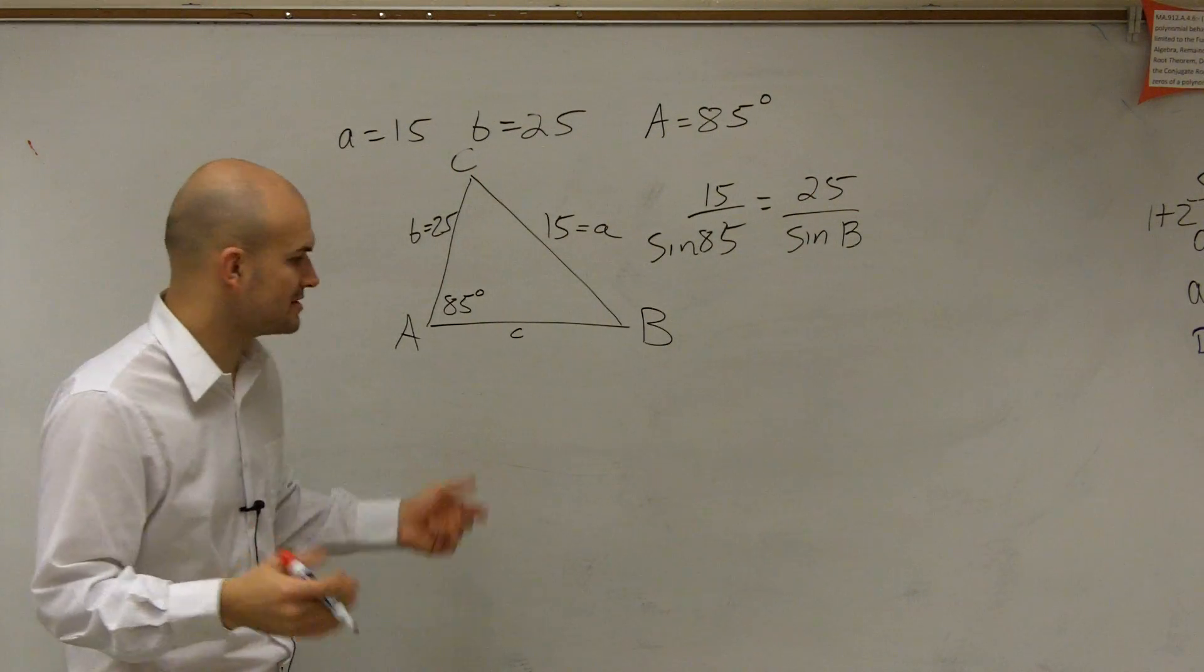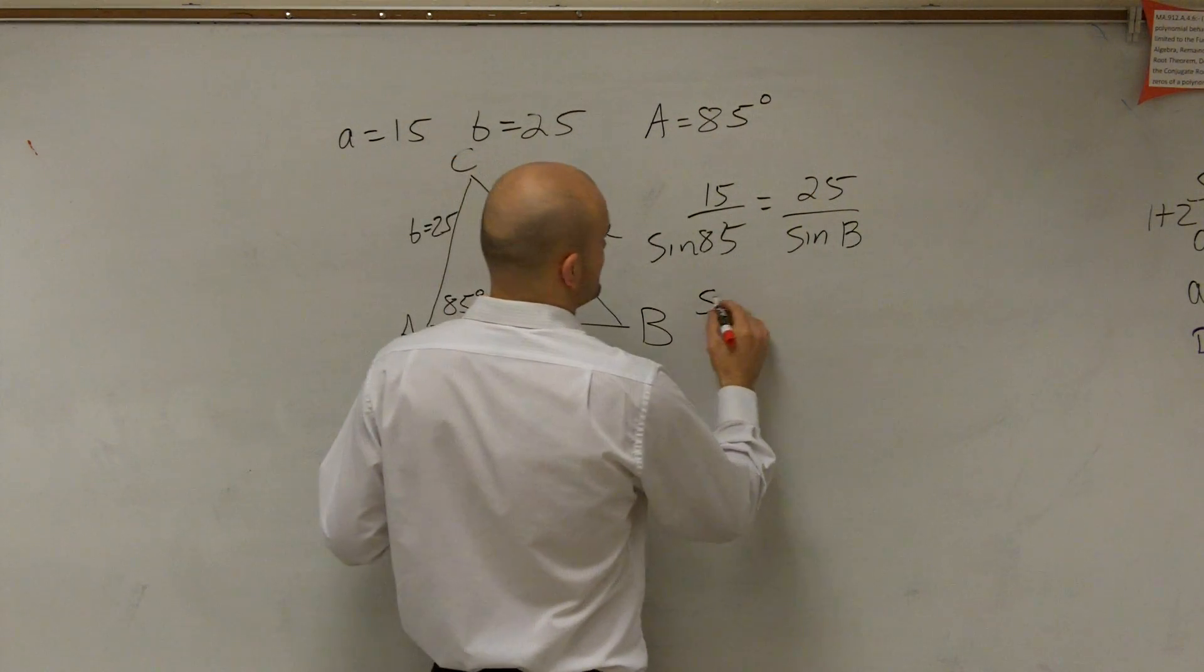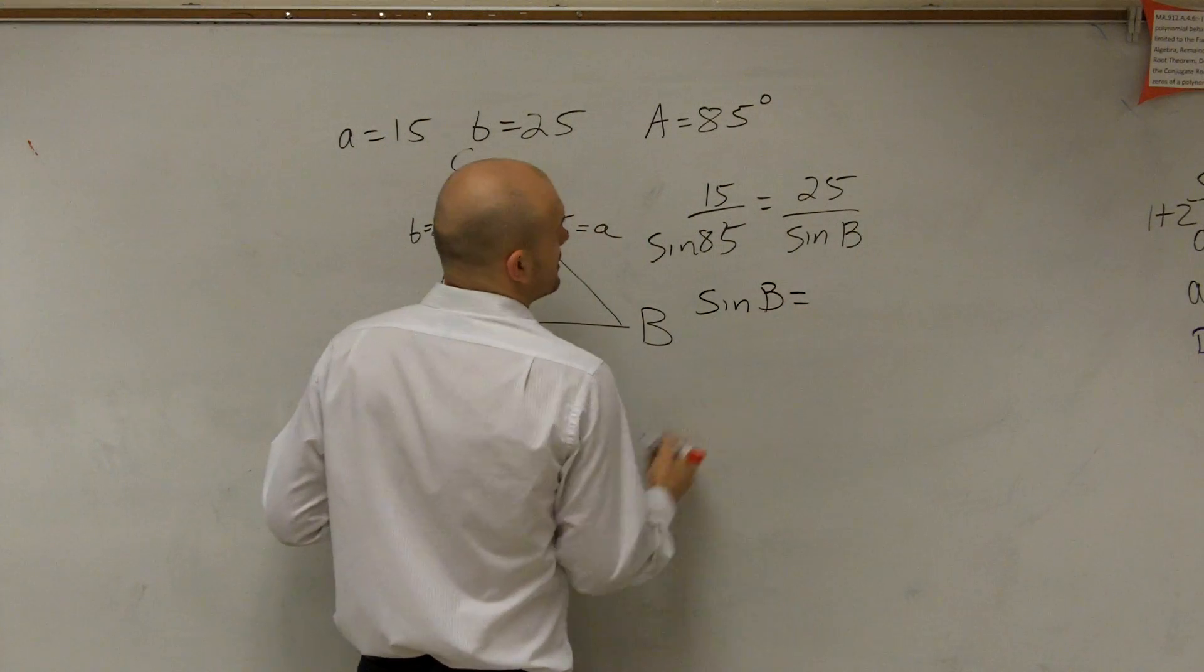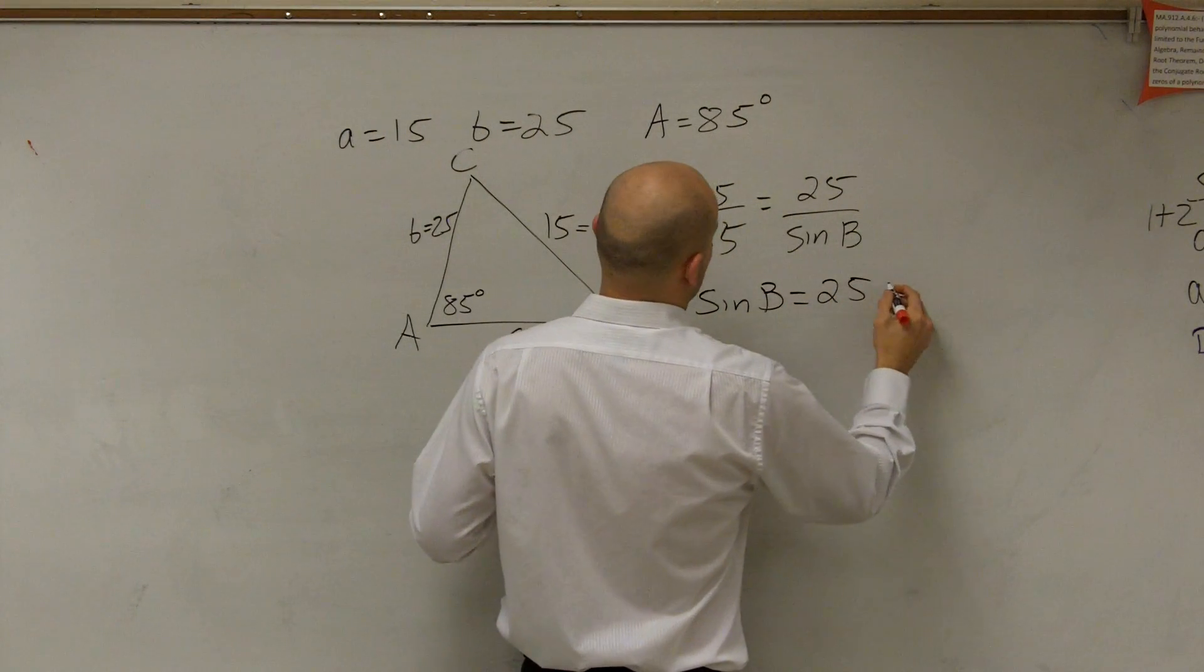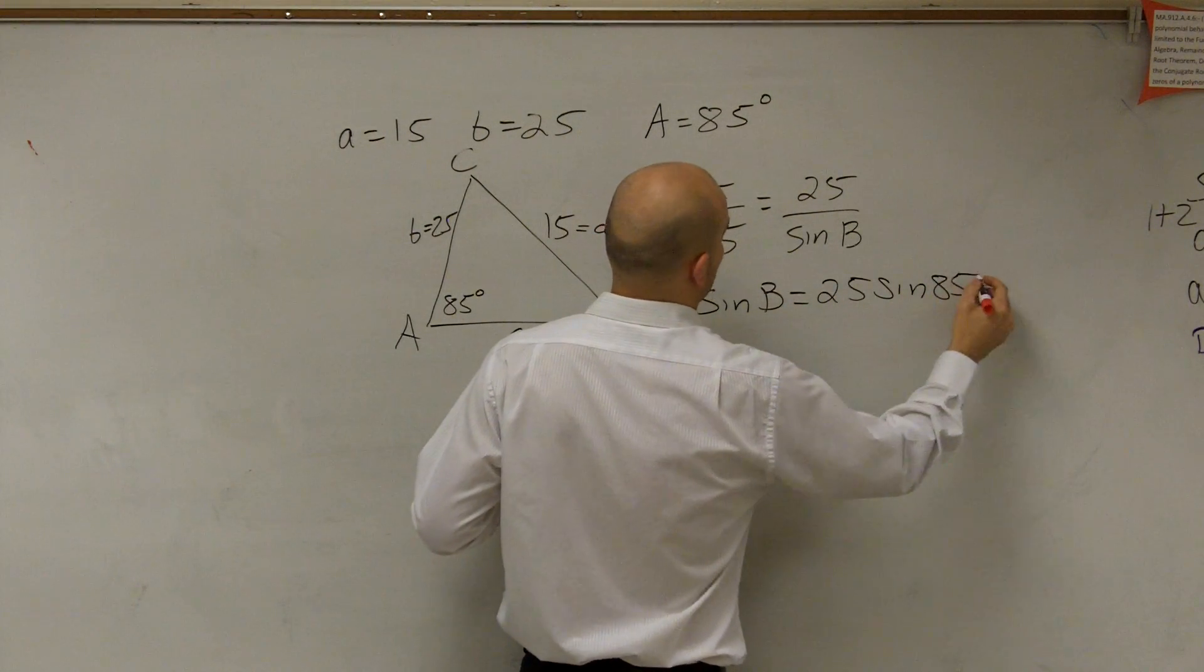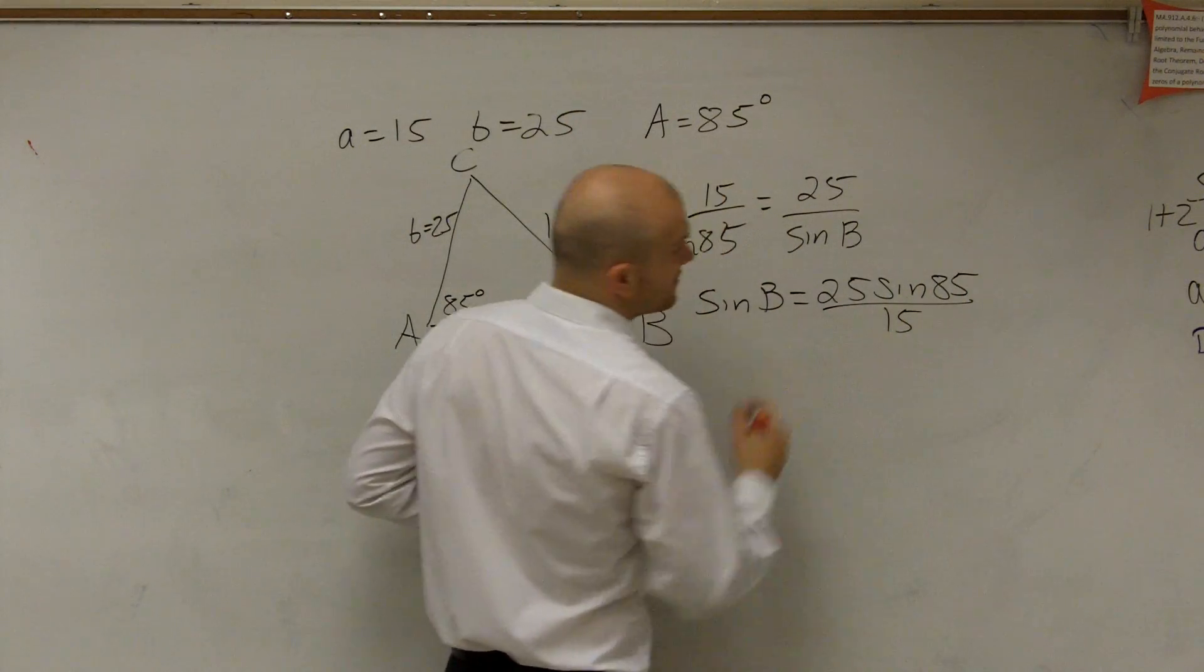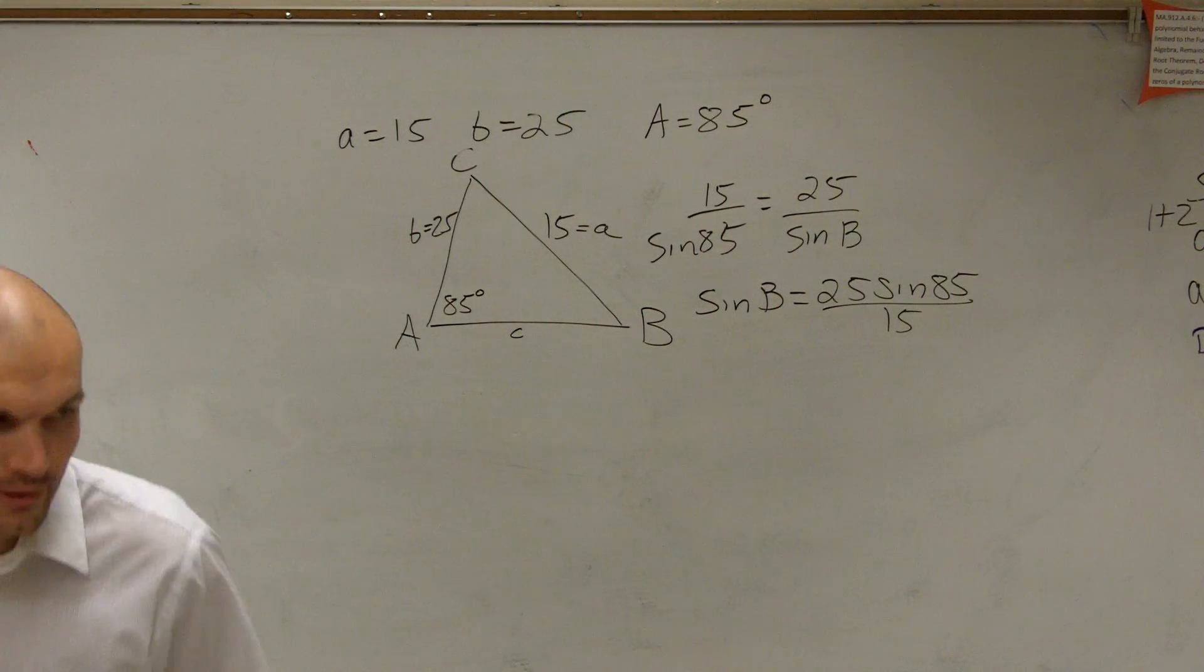So now let's just go ahead and apply our work through. So we could say the sine of B is going to equal 25 times the sine of 85 divided by 15.